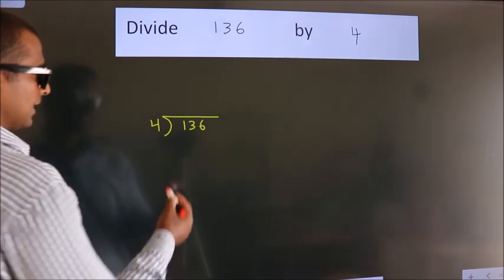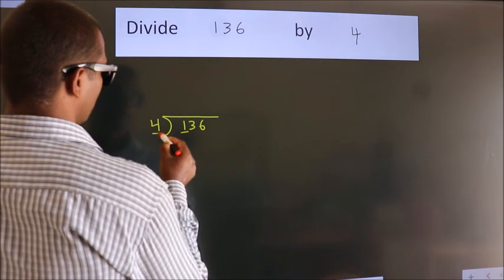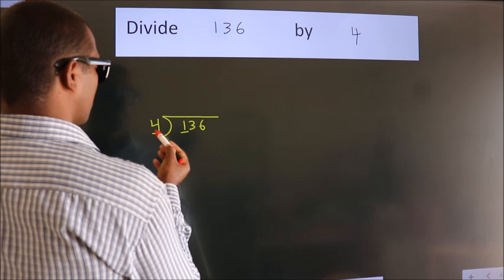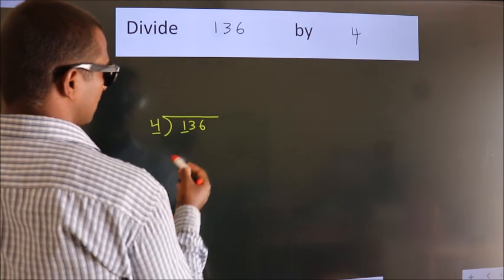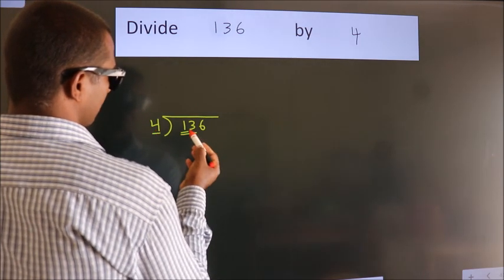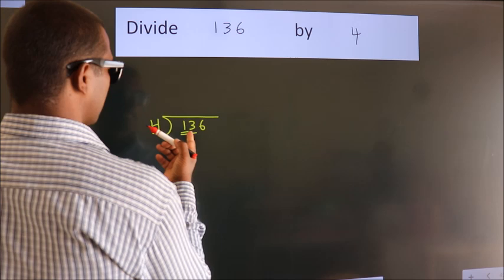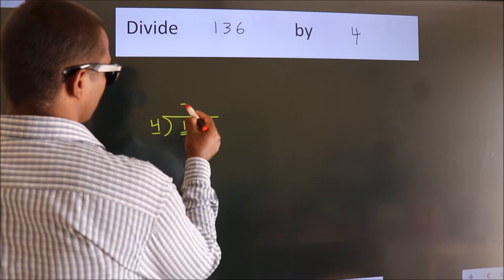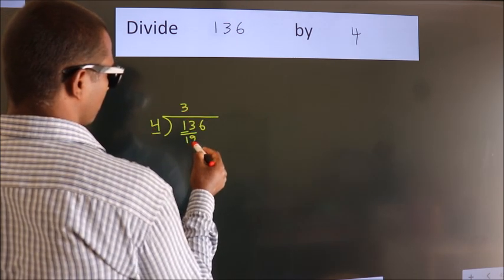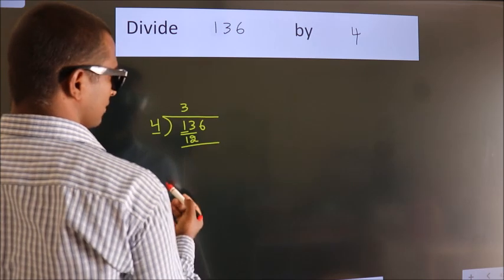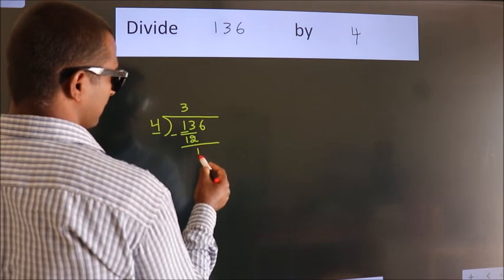Next, here we have 1, here 4. 1 is smaller than 4, so we should take two numbers: 13. A number close to 13 in the 4 table is 4 times 3 is 12. Now we should subtract. We get 1.